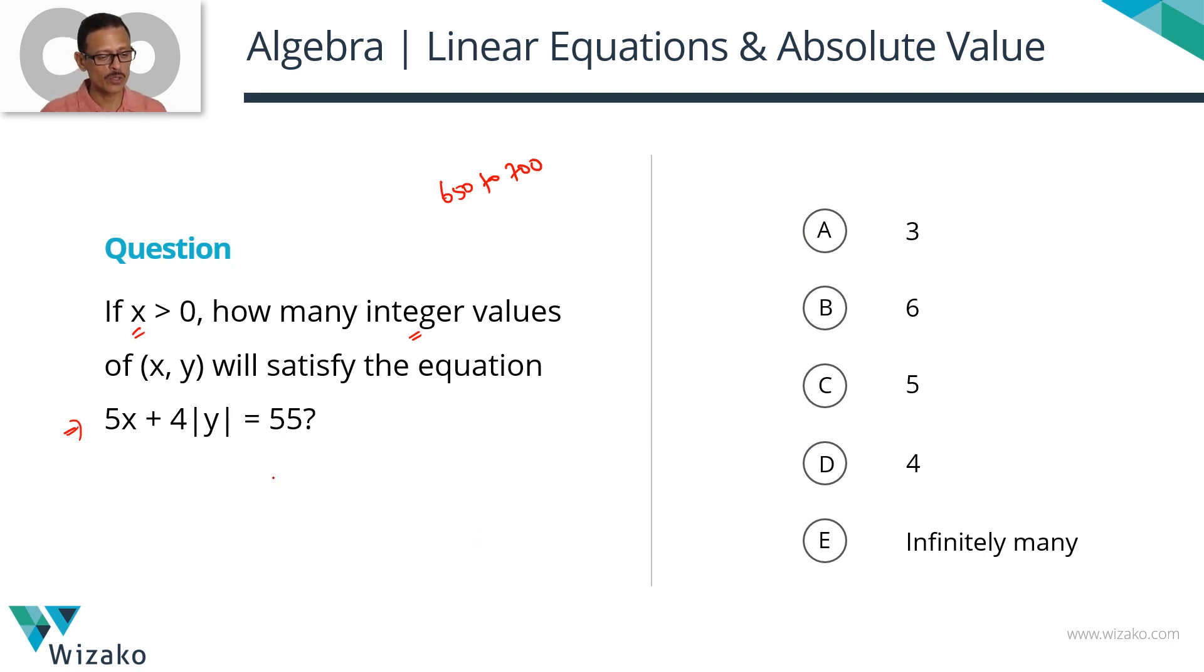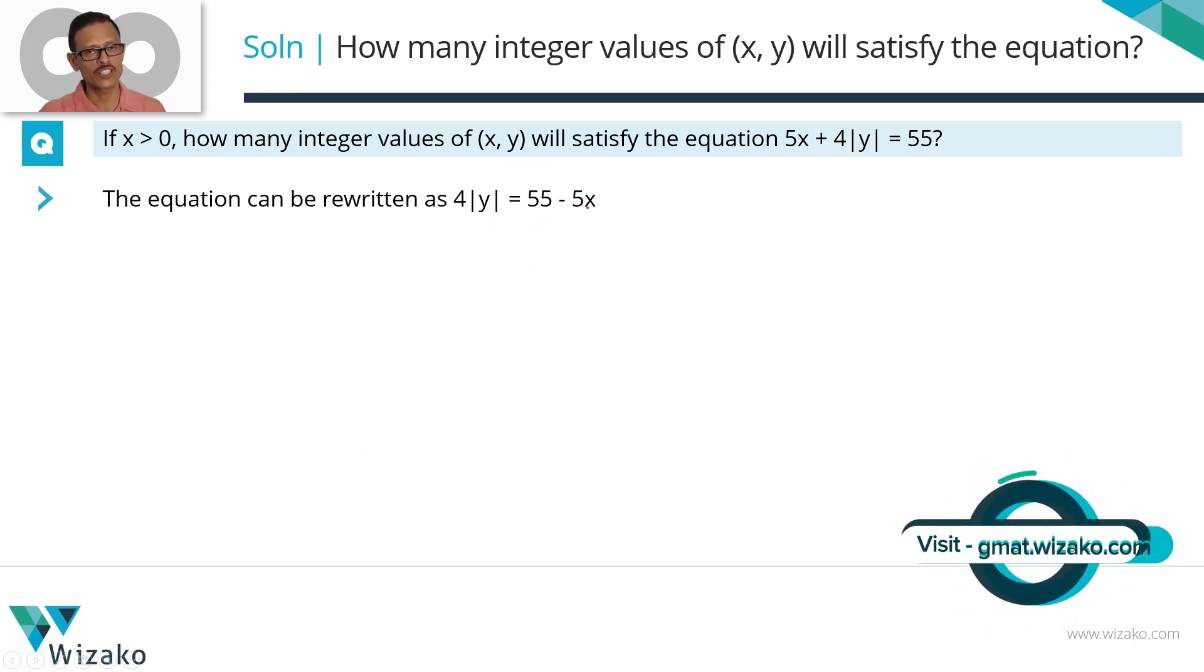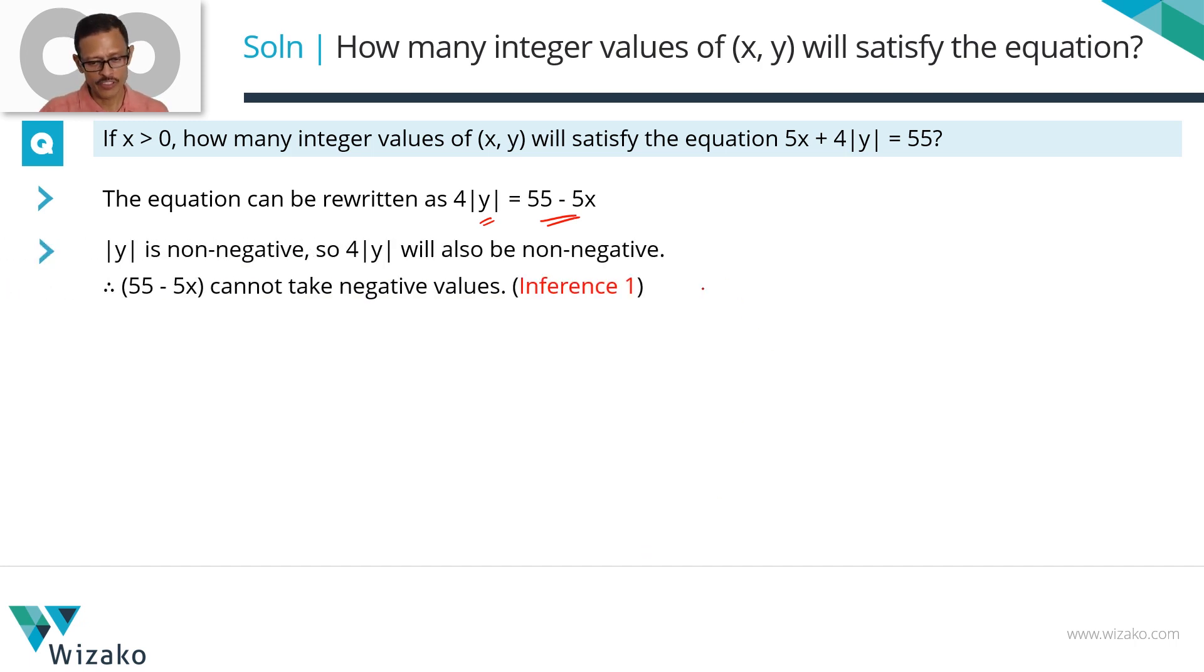First step to doing this is let's keep this 4 modulus of y on the left hand side. So 4|y| = 55 - 5x. I'm going to draw three inferences based on information that we have. The first and foremost thing, we have 4|y| on the left hand side. Modulus of y is always going to be a non-negative number. If |y| is non-negative, 4|y| will also be non-negative which means 55 - 5x will also be non-negative. So 55 - 5x could be 0 or 55 - 5x could be a positive number.